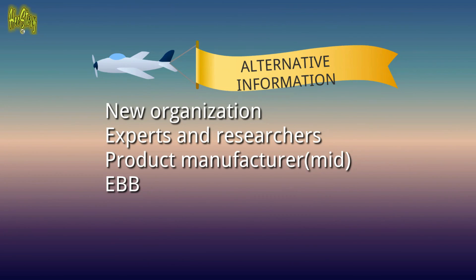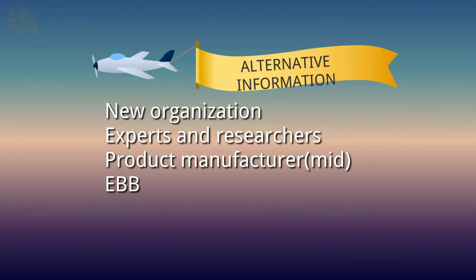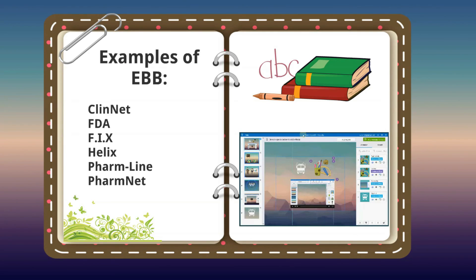The last topic is alternative information sources. These may include: news organizations providing information, experts and researchers whom people with queries can contact to answer their questions, product manufacturers as a source for product-specific information, and Electronic Bulletin Boards (EBB). Examples of EBBs include CleanNet, FDA, Fix, Helix, Farmline, and Farmnet.